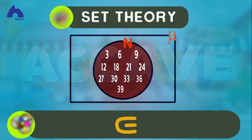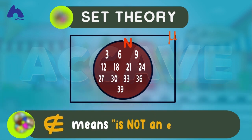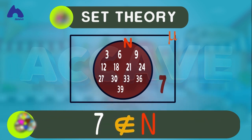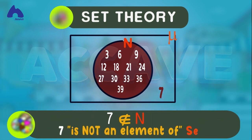And this symbol means not an element of. So, we can also read this as 7 is not an element of the set of even numbers.